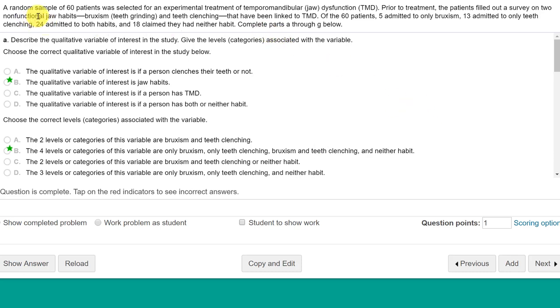Let's read the problem. We're given a random sample, 60 patients, N equals 60, and they're talking about a jaw dysfunction TMD. Patients prior to the treatment filled out a survey on two habits, non-functional jaw habits, teeth grinding, teeth clenching that have been related to TMD. Of the 60 patients, five admitted only to teeth grinding, 13 admitted only to clenching, 24 said they do both, and 18 said they do neither.